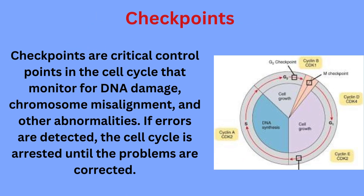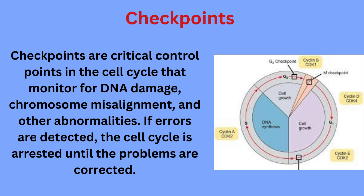Checkpoints are critical control points in the cell cycle that monitor for DNA damage, chromosome misalignment, and other abnormalities. If errors are detected, the cell cycle is arrested until the problems are corrected.